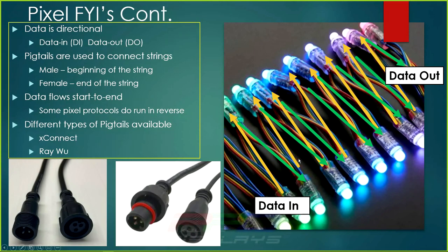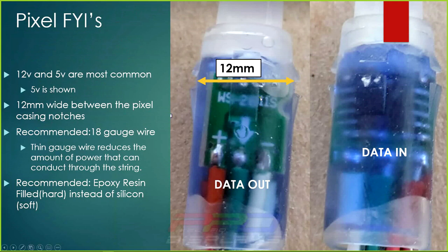A couple more FYIs: data is directional in pixels. We typically use WS2811 pixels, and pixel data flows in one direction — from left to right. Data comes in and data goes out. Looking at the pixel, the side where the black IC chip is is data-in, and the arrow on the pixel denotes data going out. This would be the back end — the input is the front end.